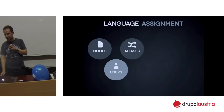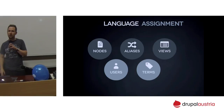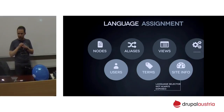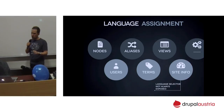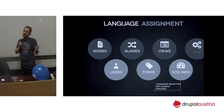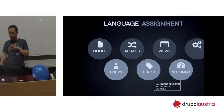In Drupal 8, we infinitely extended language tracking. We now track language on taxonomy terms, views individually, site information, and basically everything in the system. So if you install in Spanish and then need to create three pages that are French, including a view — you create that view in French, and two years later when you translate to Spanish, the system already knows it was in French.